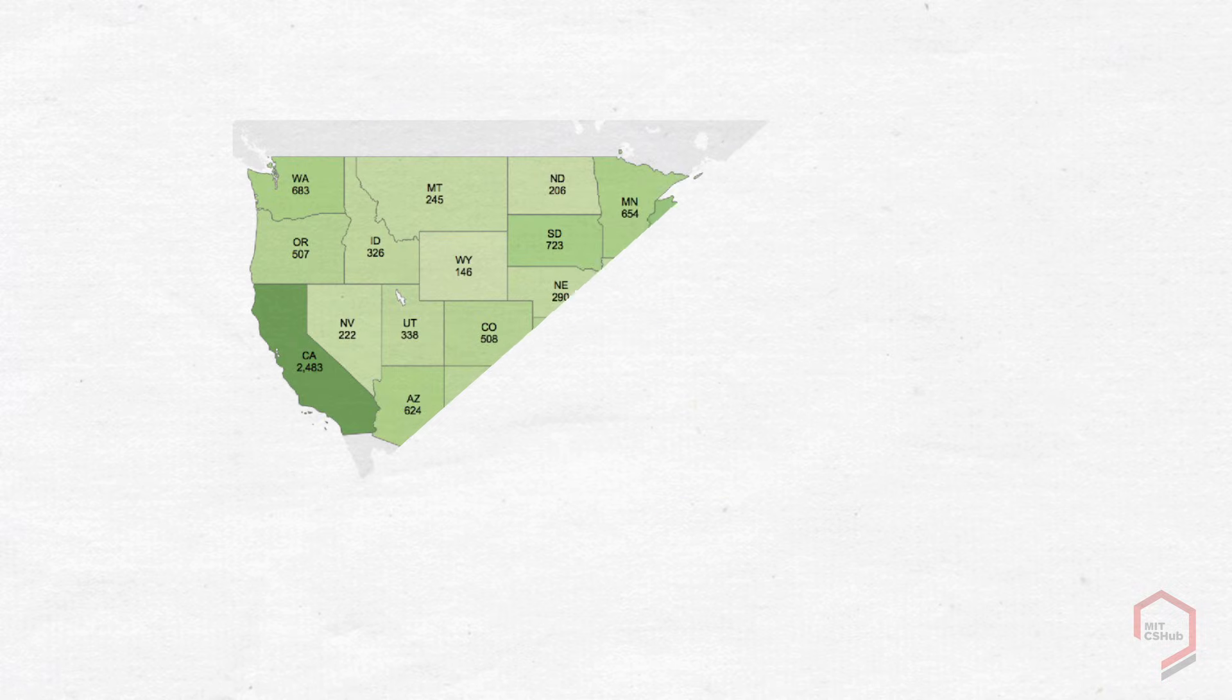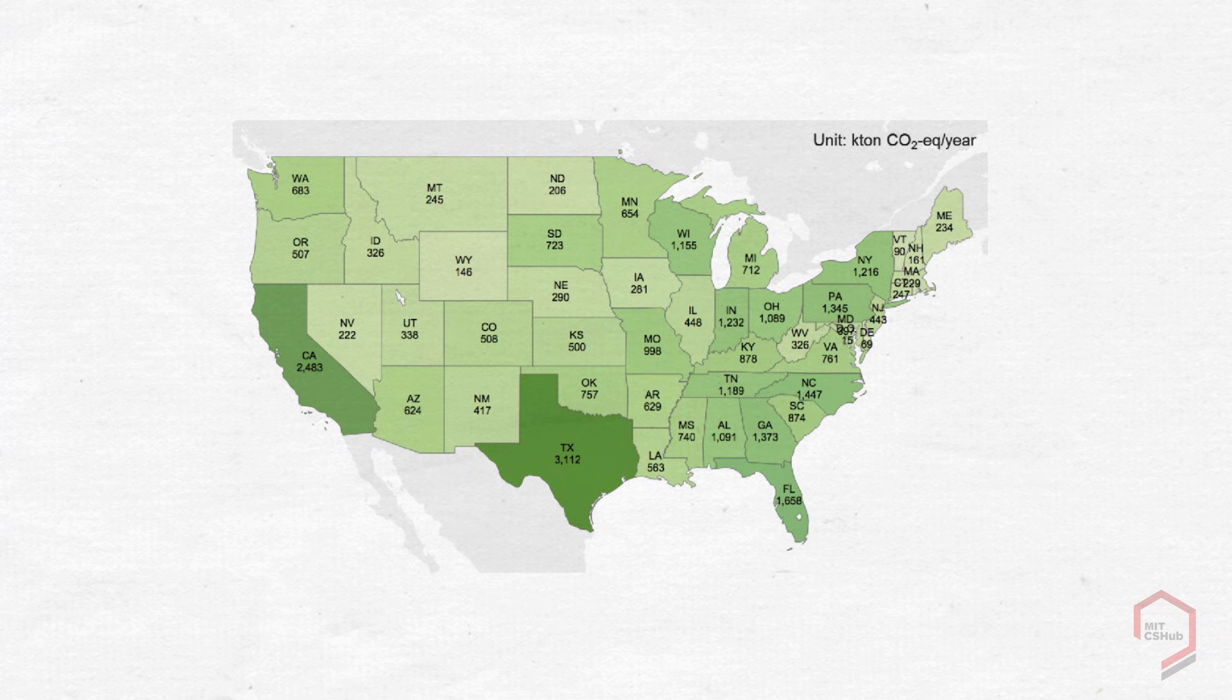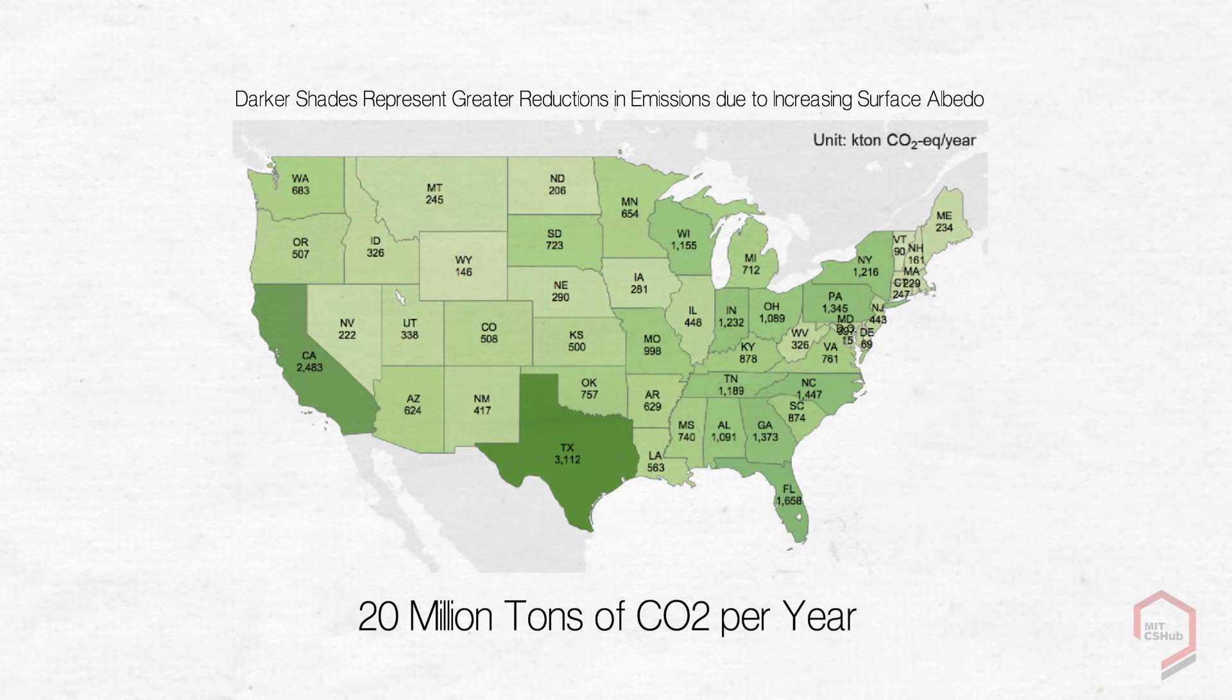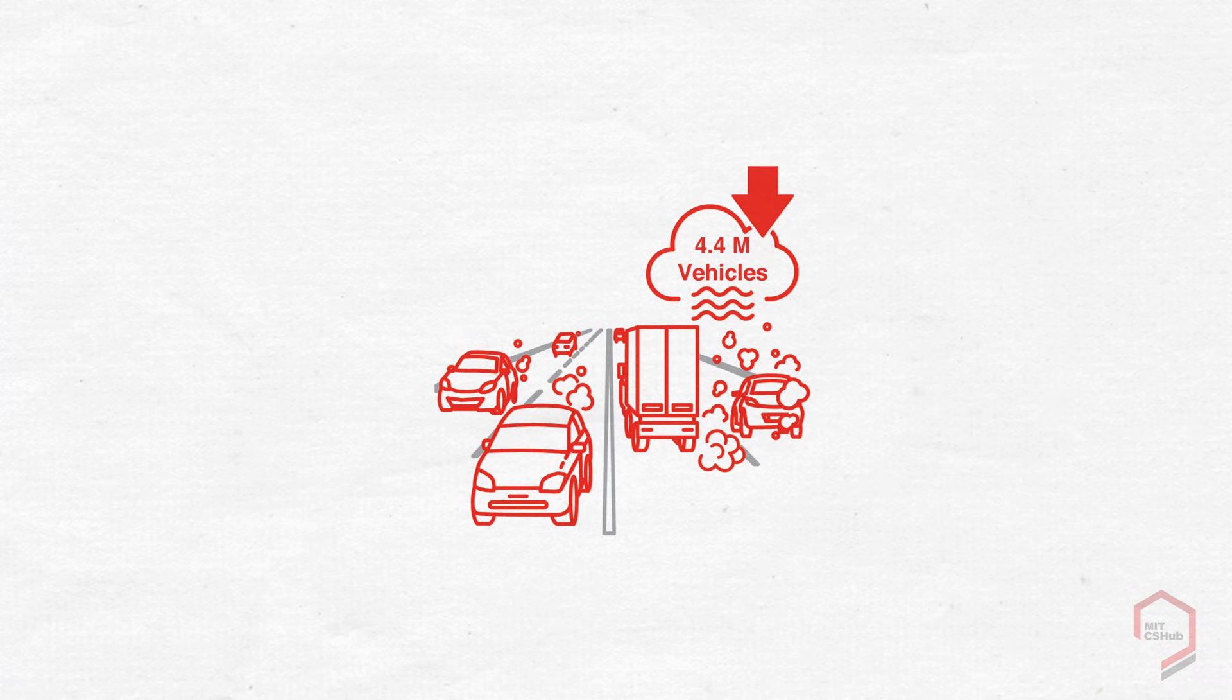According to our research at the MIT Concrete Sustainability Hub, if all urban and rural roads in the continental United States were converted to higher albedo pavements, savings would equal 20 million tons in CO2 emissions per year. This would be like removing nearly 4.4 million cars from the road.